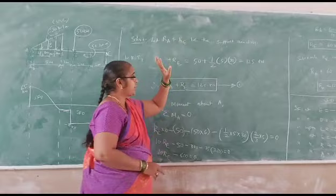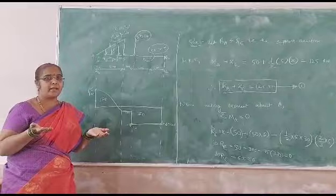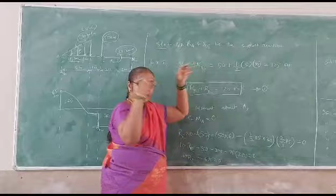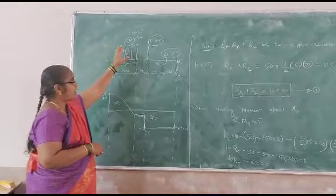These two supports which are there for the simply supported beam will carry the entire load. RA plus RE is equal to what they are going to carry. The load we are going to apply, the same load will be carried.